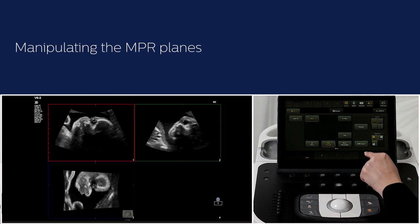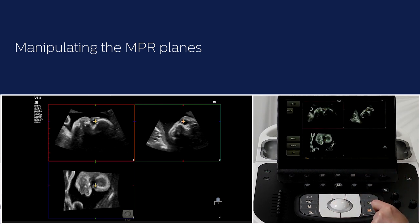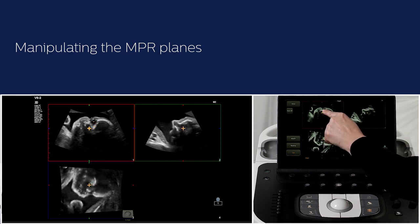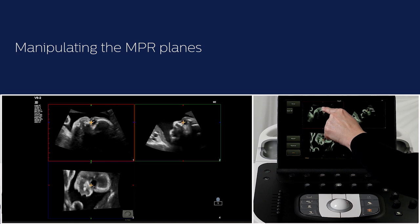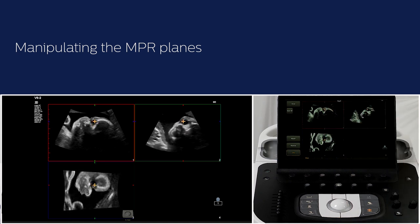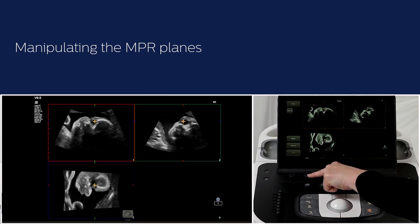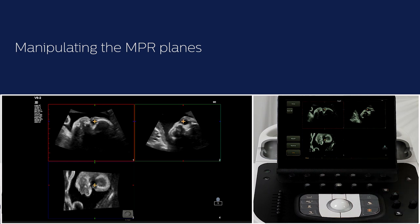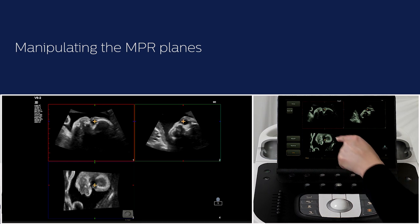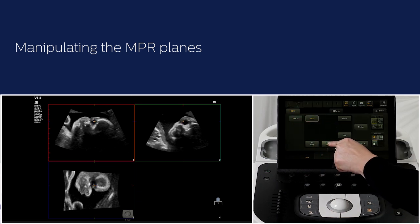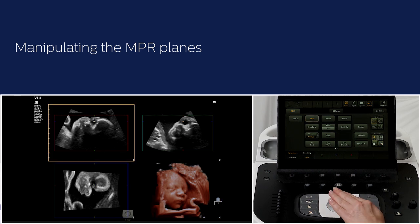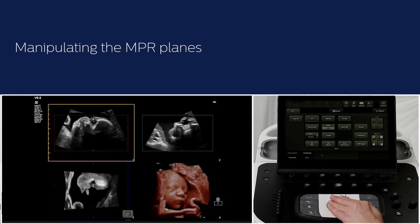NPR touch can also be used to manipulate the reference cursor on the touch screen and use the X, Y and Z rotary knobs. If we did not hide the volume, use the pointer to activate the yellow reference cursor and move it to the area of interest. Press pointer again to go back to the 3D ROI options.